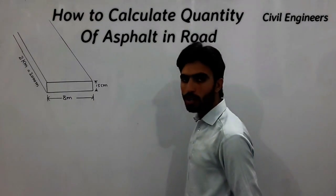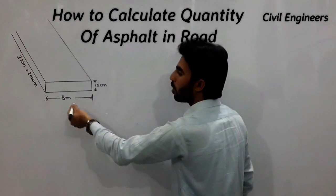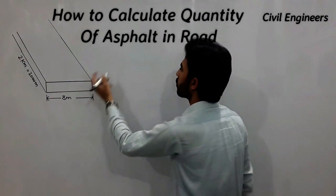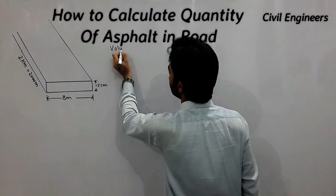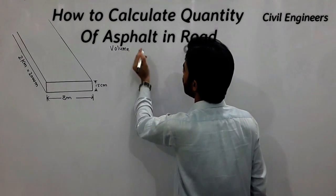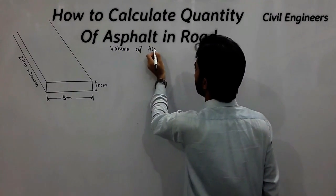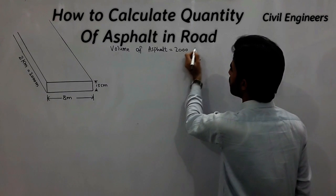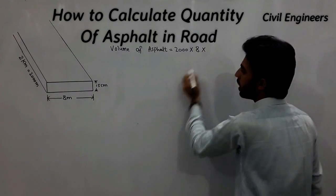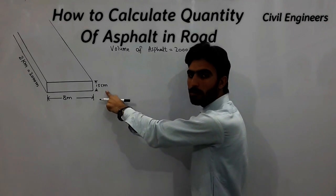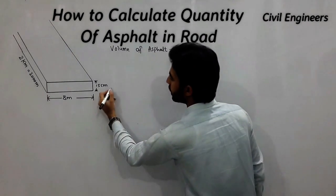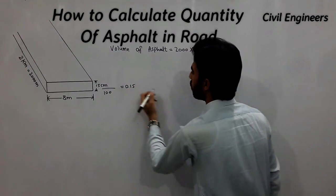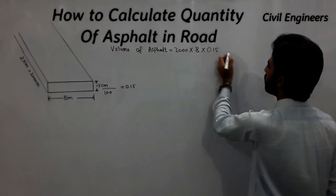First of all, I will find out the volume of the asphalt. Volume equals length × breadth × depth, which is 2000 meters × 8 meters × 0.15 meters. Note that 15 centimeters divided by 100 becomes 0.15 meters.